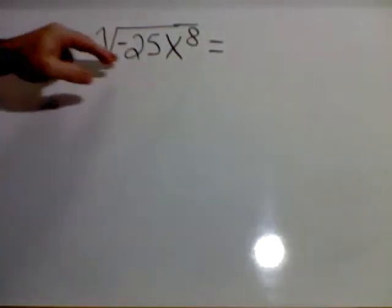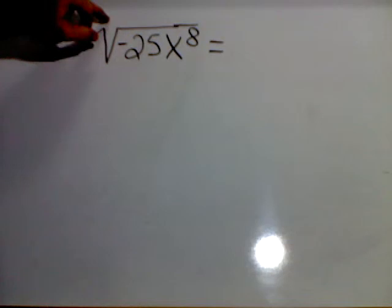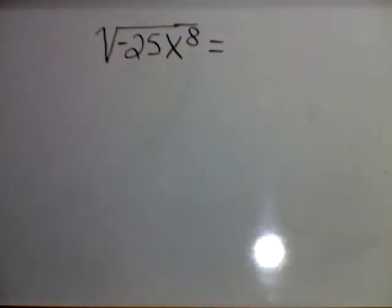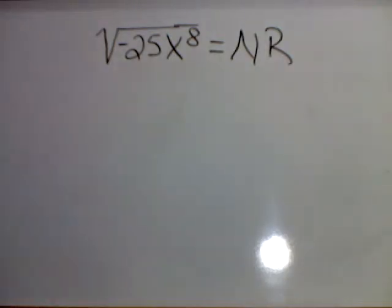Square root, negative 25x to the 8th. Uh-oh. If you paid attention earlier, I said we could not take an even root of a negative number because even roots of negative numbers cannot be possible. Once again, not real.